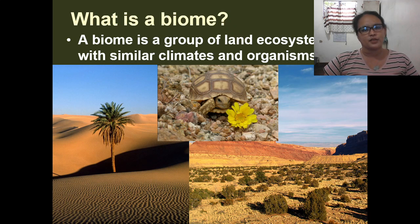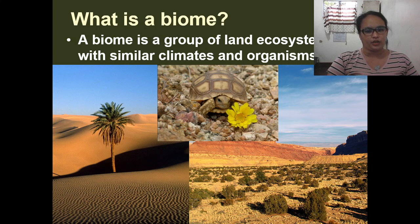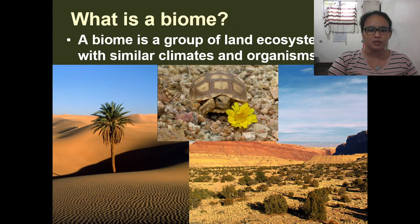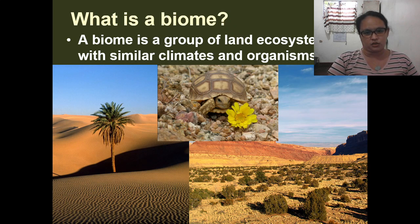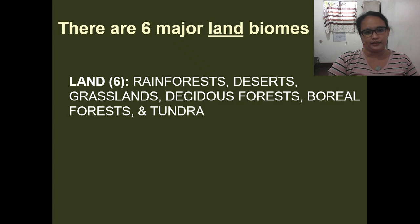A biome is a group of land ecosystems with similar climates and organisms. As you can see in the picture, you're familiar with the kind of land — we have the desert and then we have a kind of grassy land. So there are many biomes, and we will dig further into that.